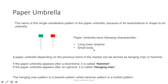The paper umbrella has the following characteristics: a long lower shadow and a small body. There is no category of bullish or bearish — both are paper umbrellas. Depending on the previous trend of the market, a paper umbrella can be termed as a hanging man or a hammer. If it appears after a downtrend, it is called a hammer; if it appears after an uptrend, it is called a hanging man.